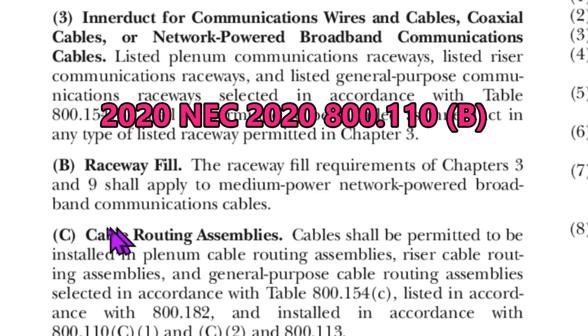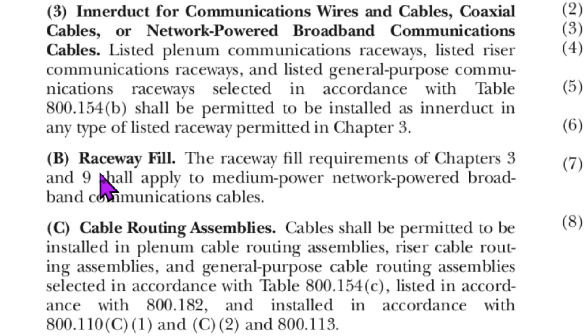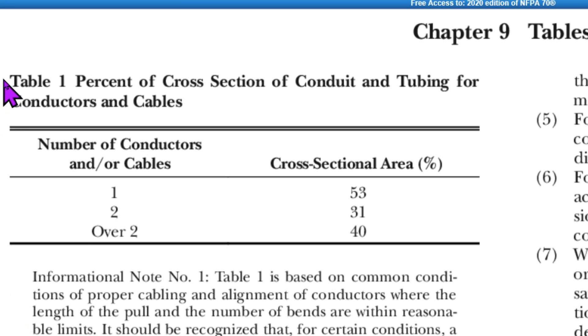With the expanding use of power over Ethernet. Let's check out the new 2020 NEC code. And let's find something that might help us pass inspections. So here is Article 800.110B, Raceway Fill. The Raceway Fill requirements of Chapter 3 and 9 shall apply to medium power, network powered, broadband communications cables. And here in Chapter 9, here's Table 1, percent of cross-section of conduit and tubing for conductors and cables. So in a conduit like EMT, you would put several Ethernet cables in it. For over two, your cross-sectional area is 40%. So you can't go over 40% of your conduit filled with Ethernet cables.